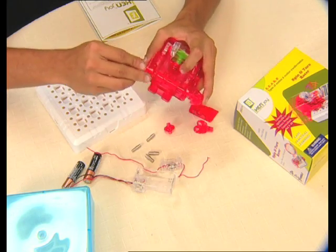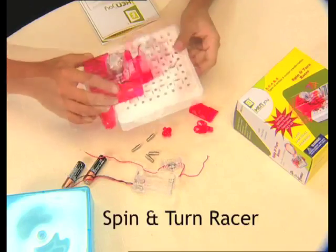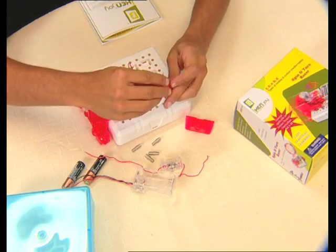We will now mount the basic car body on the mounting board. We can now assemble the front wheel and mount it on the board.